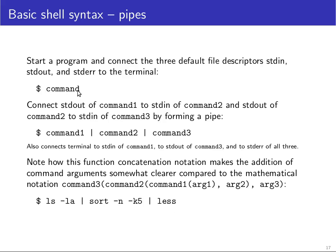When you start a program, the shell connects standard input, standard output, and standard error file descriptors to the terminal. Anything you type into the keyboard will reach the standard input of the command, and anything the command outputs to standard output or standard error will be sent to your terminal or terminal emulator.